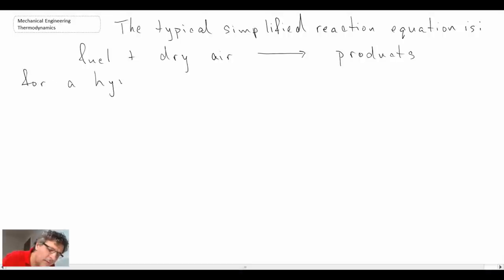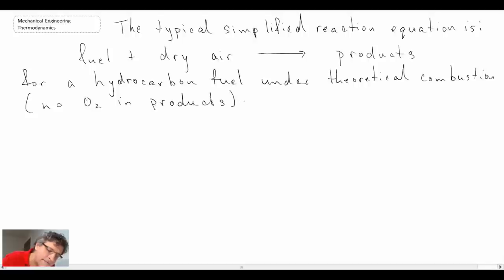Let's consider a hydrocarbon fuel under what we will call theoretical combustion. And we'll define that in a moment. And what that implies is that there is no oxygen in the products. Some generic hydrocarbon fuel, we have carbon and hydrogen, x moles of carbon, y of hydrogen. Plus some theoretical amount of air.